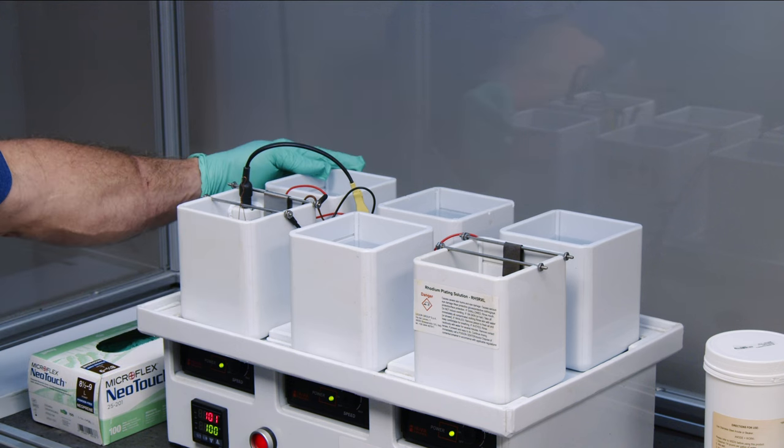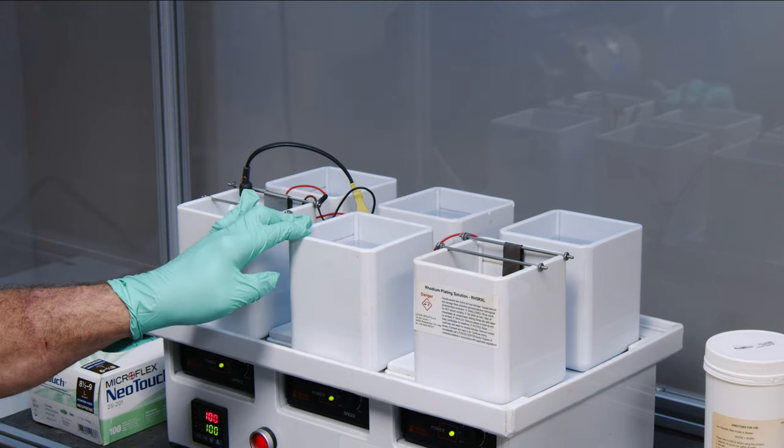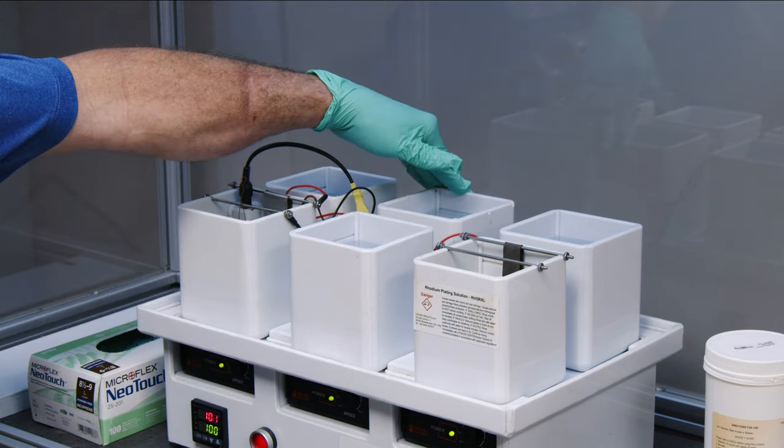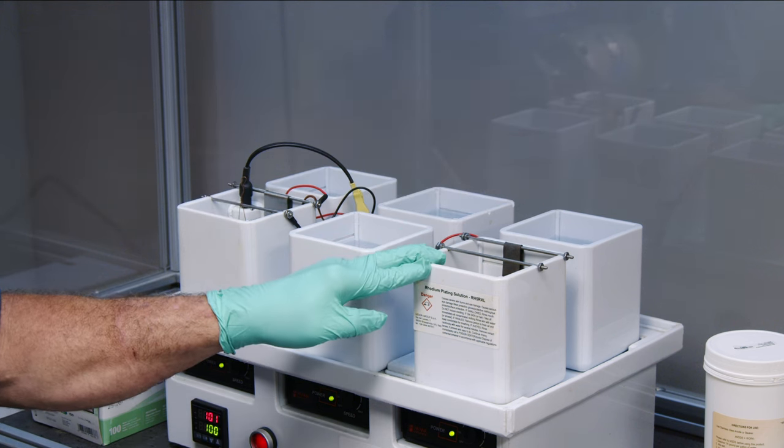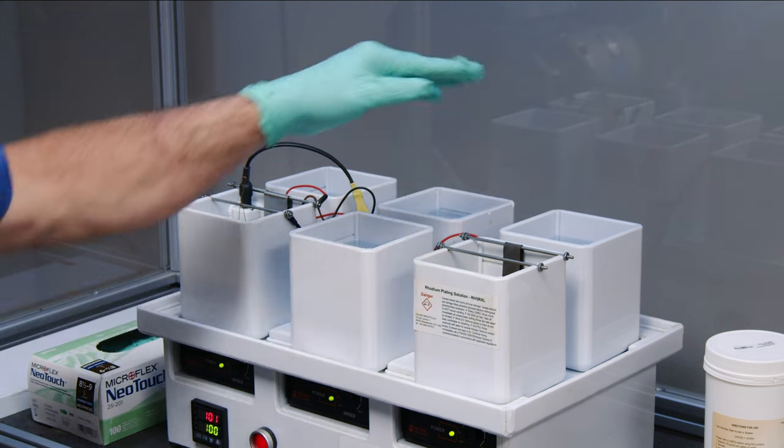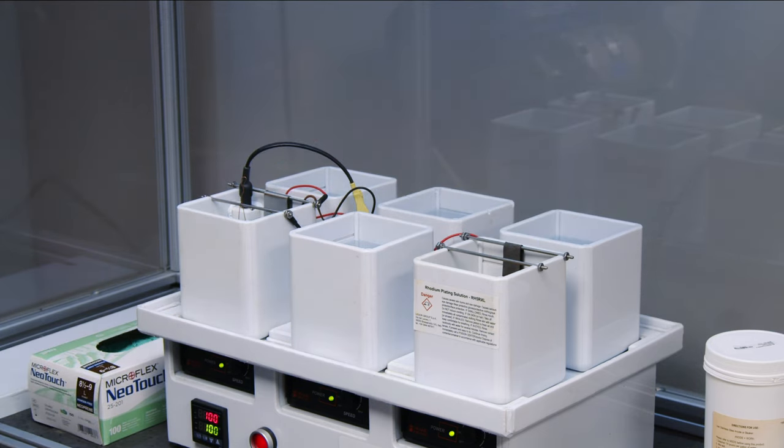In the back, we have a distilled water rinse. In the middle container, we have our Acid Activator with another distilled water rinse in the rear. And in the front right here, we have our room temperature rhodium with our final rinse in the back side of the plating unit.